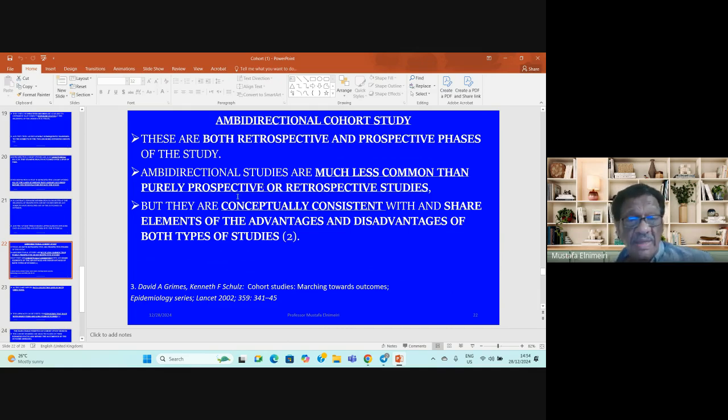Ambidirectional studies have been stated by David Grimes and Kenneth in their cohort study article published in the epidemiology series of Lancet in 2002.